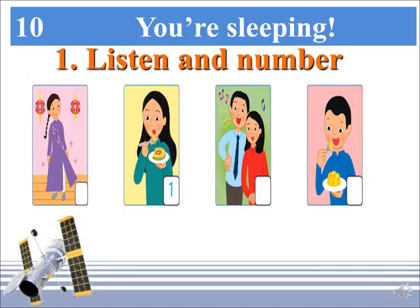Now the last time. Before we listen the last time, take your pencil and number the pictures. Dear Kim, now I have the photos of our Tet holiday. 1. My Aunt Tam is eating the banh chung. 2. Here are my mom and dad, they are singing. 3. This is me, I am wearing my new purple ao dai. 4. Here is my brother, he is eating mangoes.